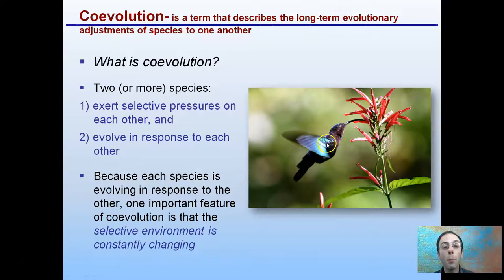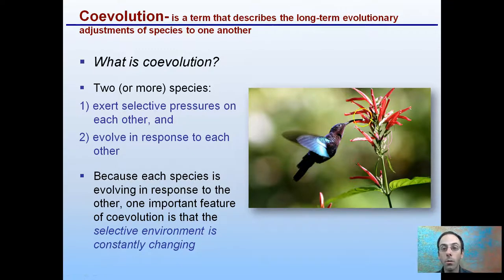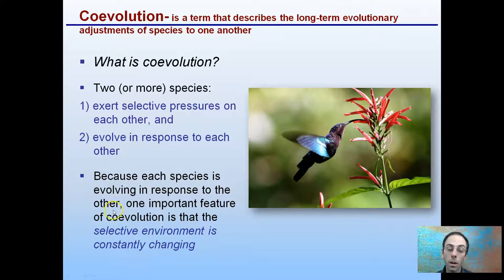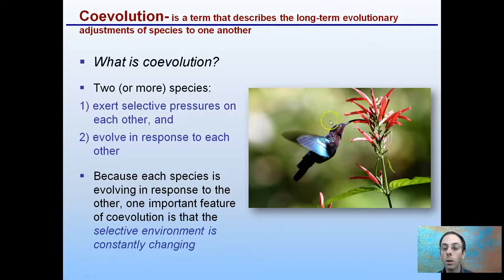Our example here with our hummingbird and our flower: the hummingbird has a very long beak, and the nectar is located very deep in the flower. So this is selecting for this hummingbird to feed and pollinate this particular flower. Both of these are adapting to meet the needs of each other. Because each species is evolving in response to each other, one important feature of coevolution is that the selective environment is constantly changing. Both the coloration and the depth of the flower relate to that coevolution that the hummingbird is also adjusting to.